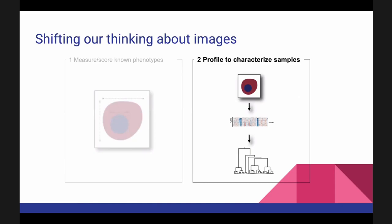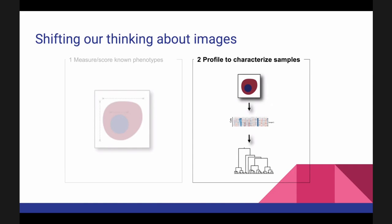But what if we want to go beyond the things we know we care about? What if there are things we don't know that we don't know? This is where morphological profiling or image-based profiling comes in: instead of looking at one or two known things, look at everything and see what's there. Finding objects is the hard part — let's throw on as many measurements as we can, because that's easy. Most biology papers that call themselves 'high content' still only report one or two measurements, even though a typical microscope camera has a million pixels. It leaves a lot of data on the table.